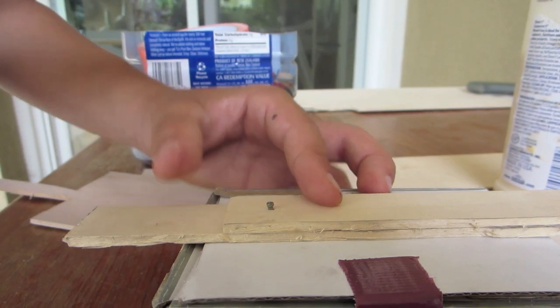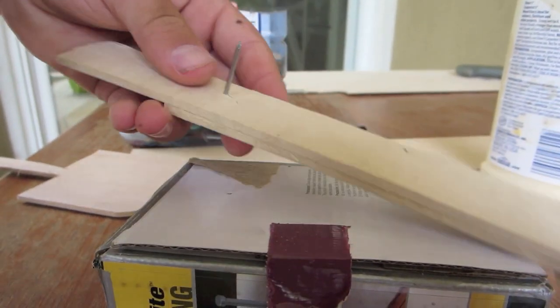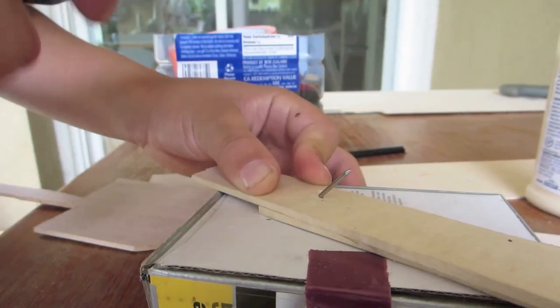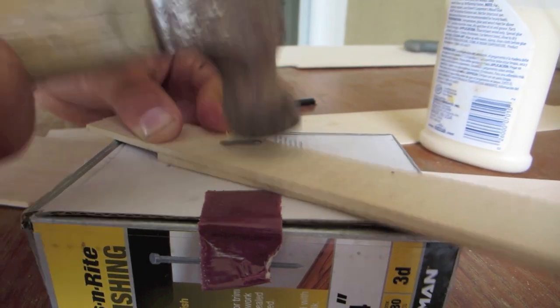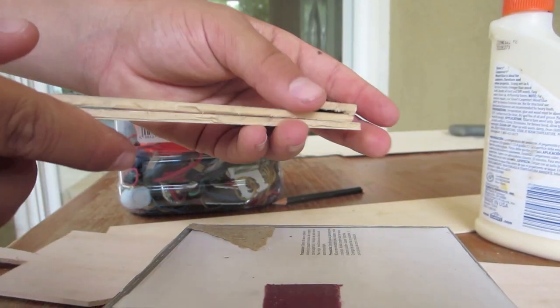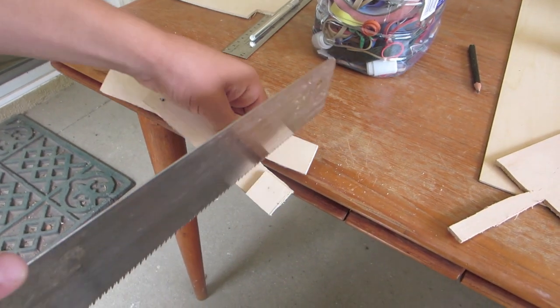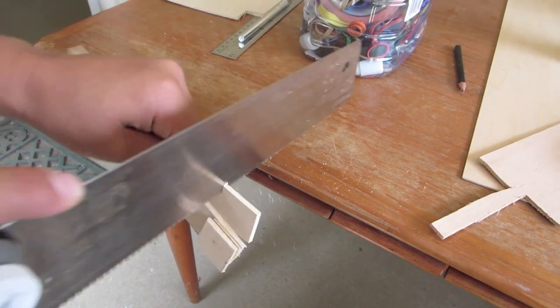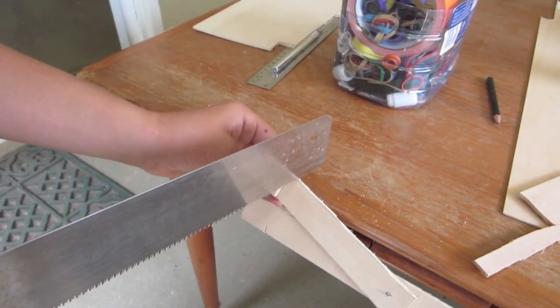Now you need to cut two grooves into the wood to hold the rubber band. One goes about here and one needs to go around here.